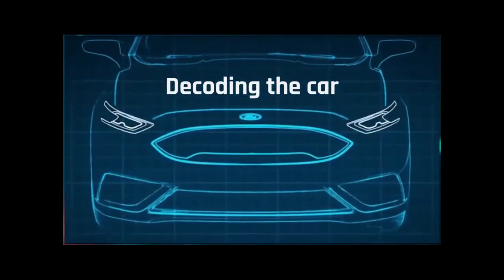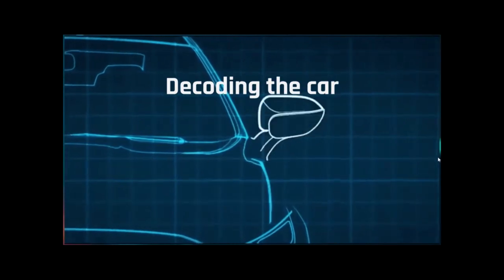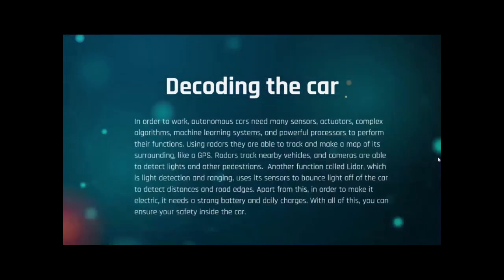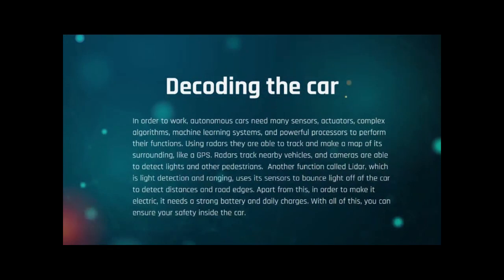Decoding the car. In order to work, autonomous cars need many sensors, actuators, complex algorithms, machine learning systems, and powerful processors to perform their functions. Using radars, they are able to track and make a map of their surroundings, like a GPS. Radars track nearby vehicles, and cameras can detect lights and other pedestrians.